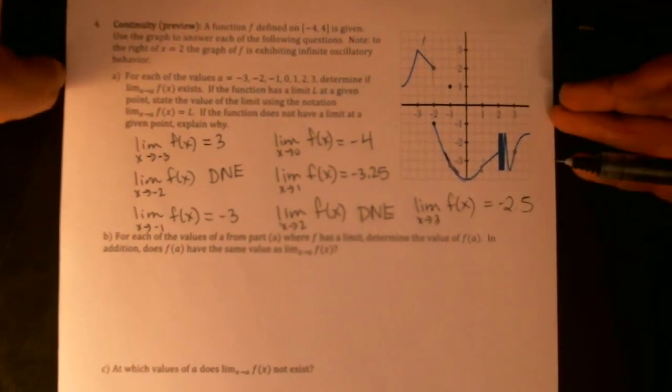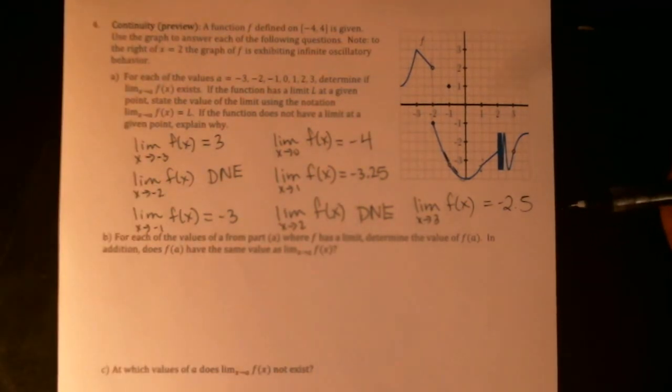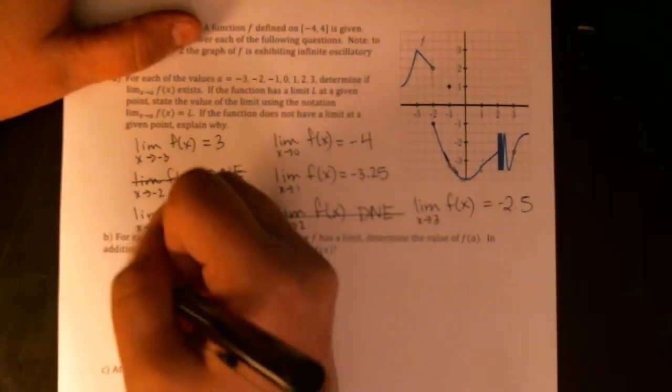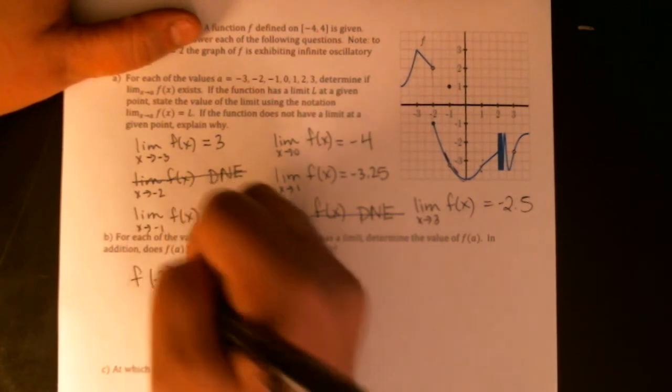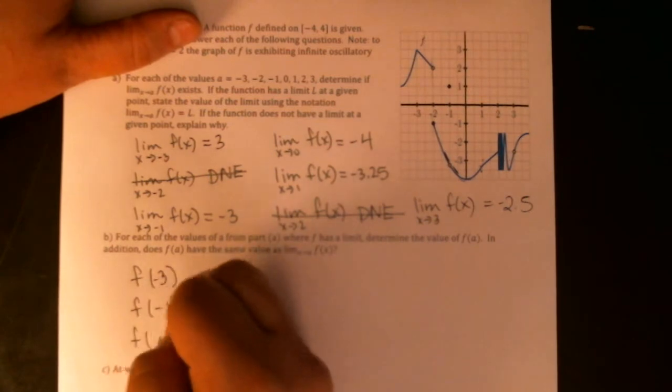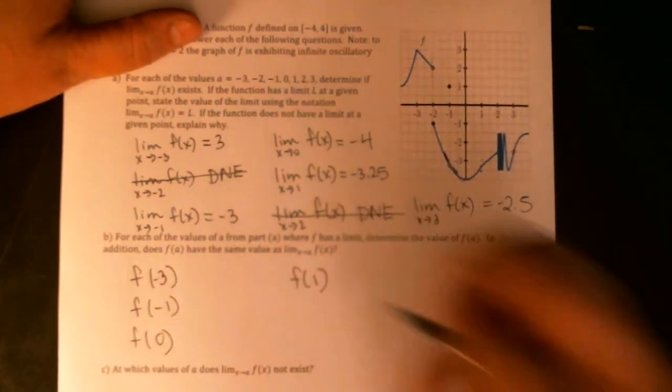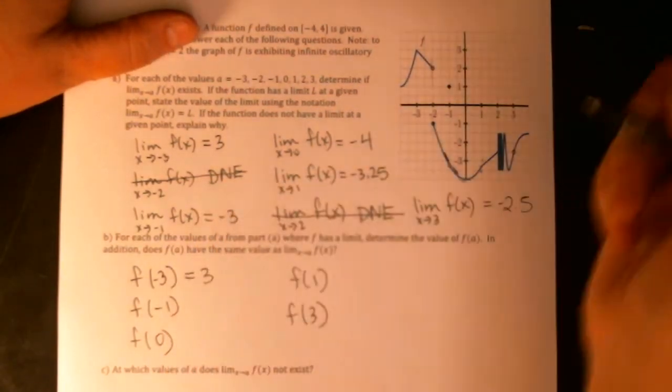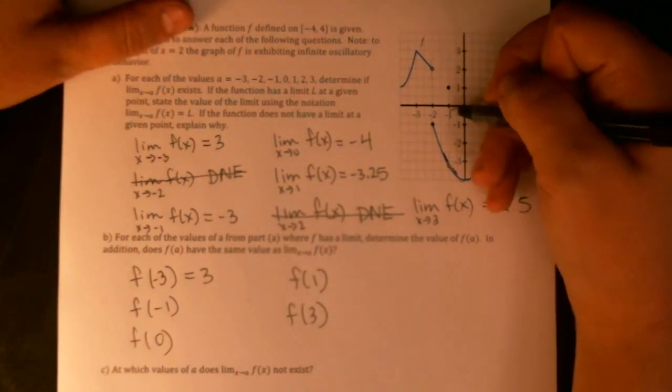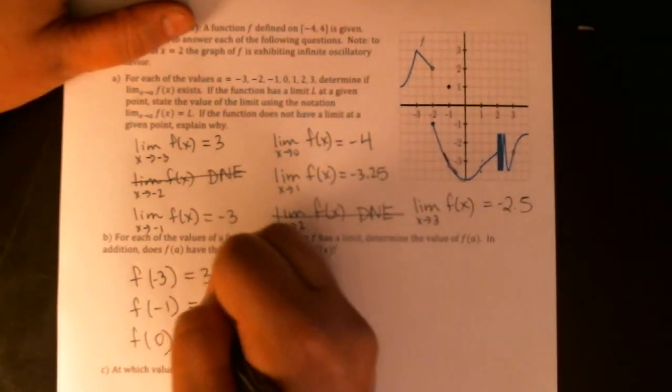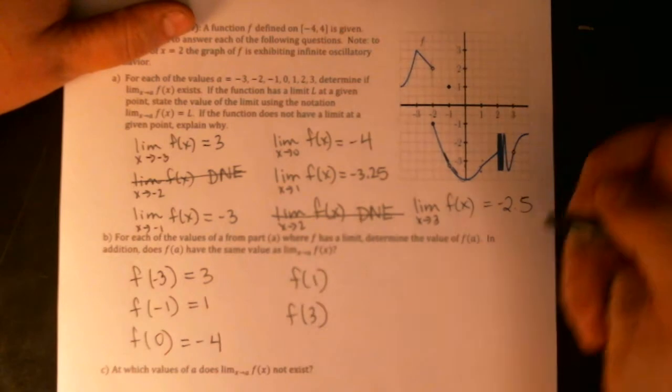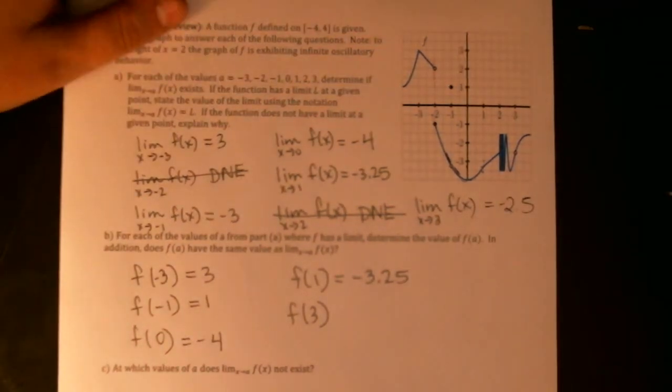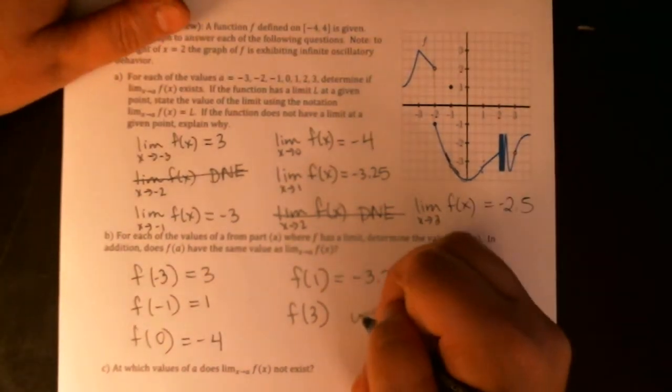We're now supposed to walk through each of those x values and anywhere that the limit exists, we're supposed to find the value of the function. So we're trying to get to a comparison here. So we're going to ignore those two. So I want f of negative three, f of negative one, f of zero, f of one and f of three. So f of negative three is three. f of negative one. Oh, that's kind of an interesting one. It's not down there. It's up here. It's one. f of zero is negative four. f of one is negative three point two five. And f of three is undefined.